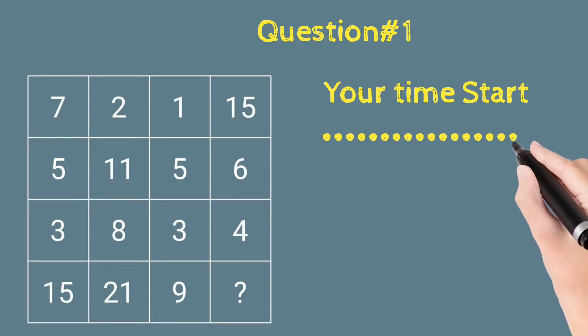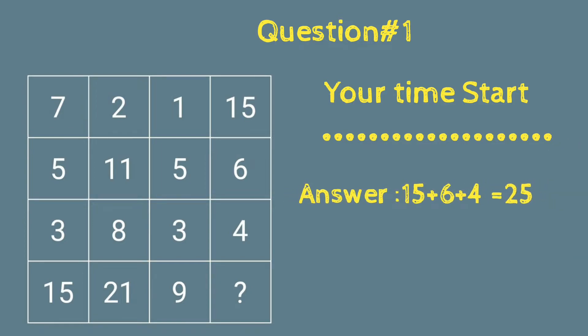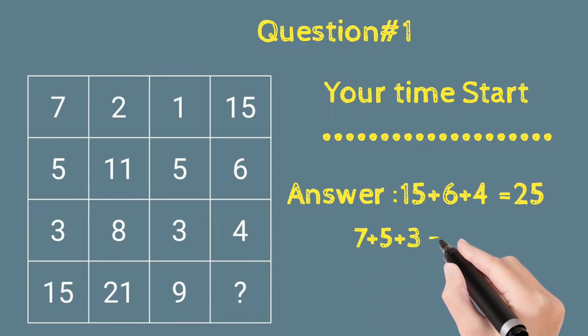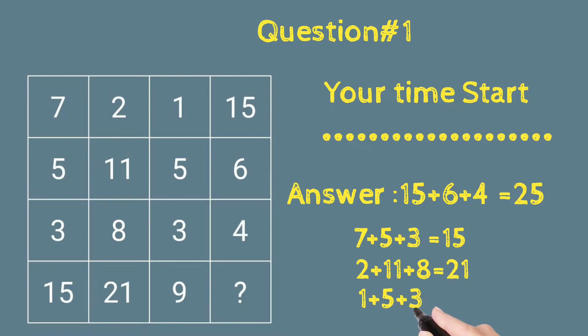will be the answer. And the answer is 15 plus 6 plus 4 = 25, because 7 plus 5 plus 3 = 15, 2 plus 11 plus 8 = 21, 1 plus 5 plus 3 is equal to 9.